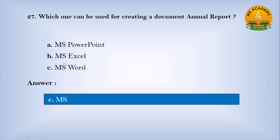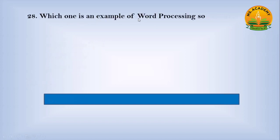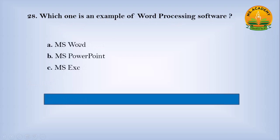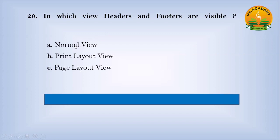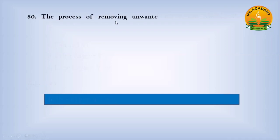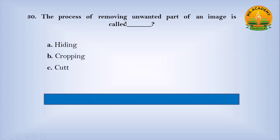Which one can be used for creating a document or annual report? Option A: MS PowerPoint, option B: MS Excel, option C: MS Word. Answer: C — MS Word. Which one is an example of word processing software? Option A: MS Word, option B: MS PowerPoint, option C: MS Excel. Answer: A — MS Word. In which view are header and footer visible? Option A: normal view, option B: print layout view, option C: page layout view. Answer: B — print layout view. The process of removing an unwanted part of an image is called — option A: hiding, option B: cropping, option C: cutting. Answer: B — cropping.